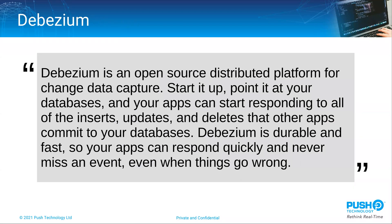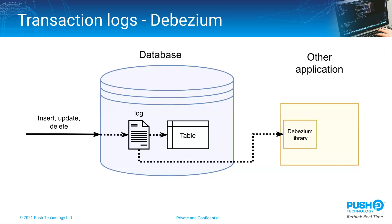This is where the Debezium project comes in. It's a third-party open source library that can connect to databases, read their transaction logs and expose them using a standard Java API. An application using the Debezium library makes a connection to a database and registers an interest in tables it wants to capture change events on, which superficially sounds a lot like triggers. One great thing about this is that it works against many types of database but you don't have to get involved in the high maintenance plumbing and it's very easy to use. It's the best option I've come across but it does have a few little limitations.